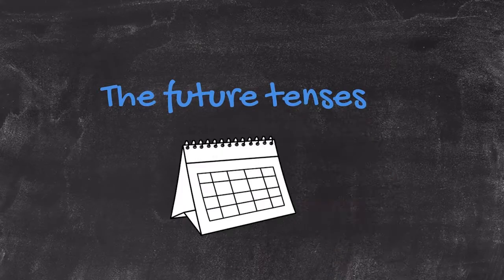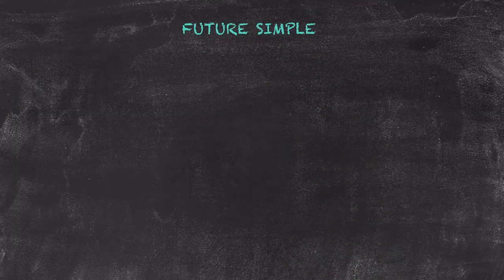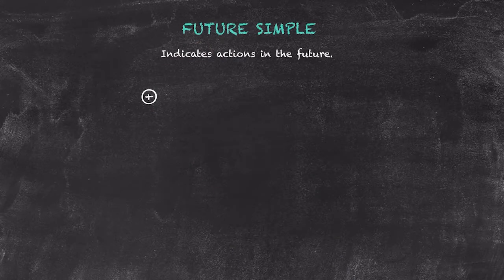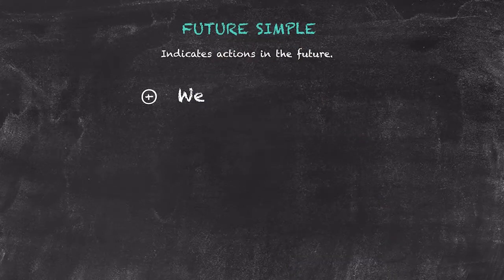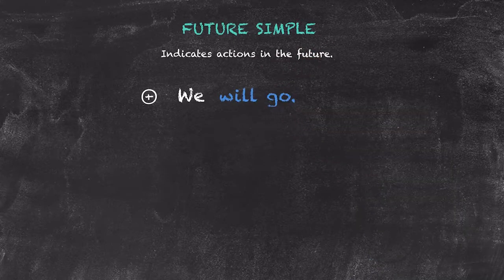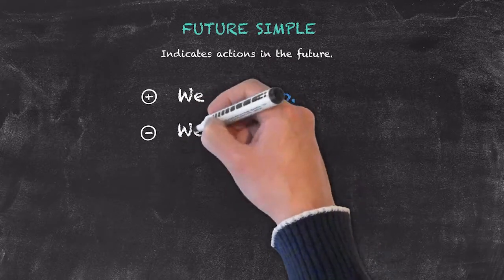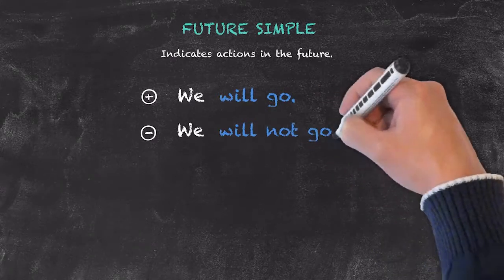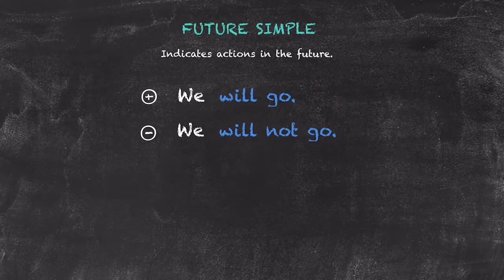Now let's look at the future tenses. We'll focus first on the future simple tense. The future simple tense is used to indicate actions in the future. To form the positive, we use our subject first — here we're using 'we' — followed by 'will' and our main verb 'go': 'we will go.' To make the negative form, we begin with our subject again, followed by 'will not' just before our main verb 'go.'